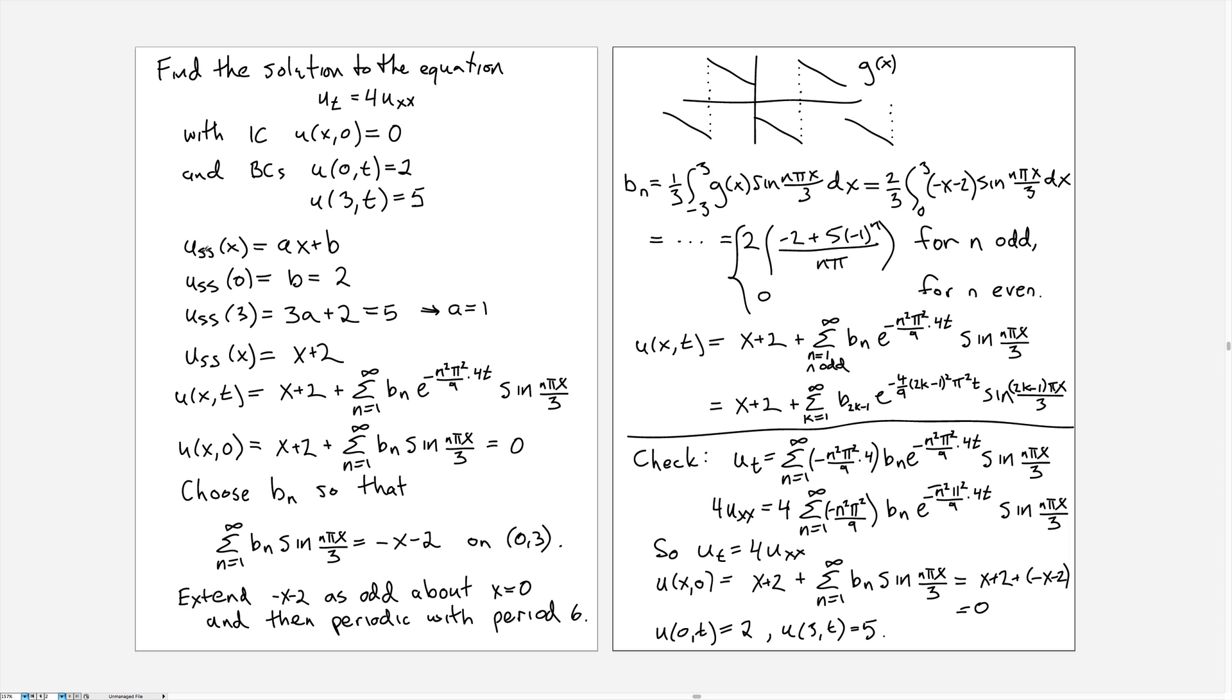So the first thing we do is calculate the steady state ax + b. We know that u_ss(0) has to be 2, so the b value has to be 2, and u_ss(3) is going to be 3a + 2, which has to equal 5 according to the boundary condition, so a has to equal 1.